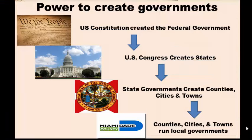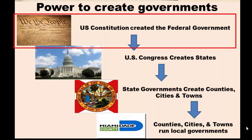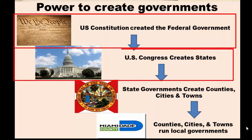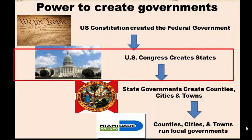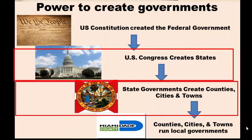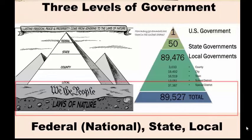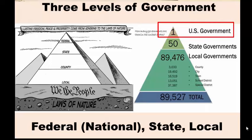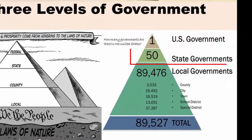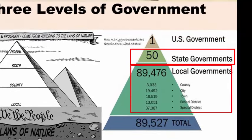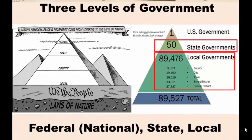Let's take a quick look at who is in charge of creating the various governments. The U.S. Constitution created the new federal government in 1787. Congress is in charge of creating new states. And state governments create counties, cities, towns, and villages. There is one national government, 50 state governments, and almost 90,000 local governments in the United States.